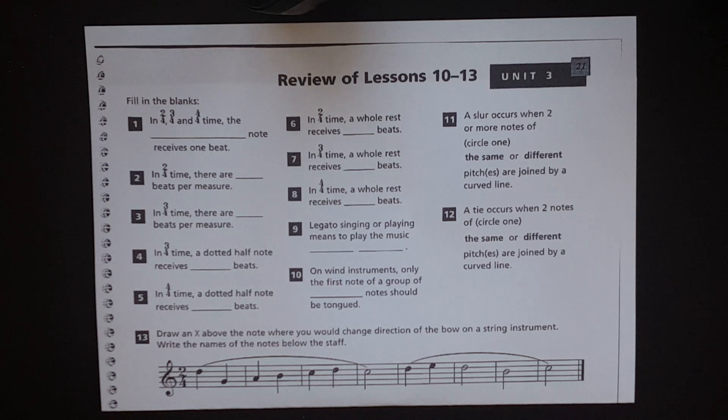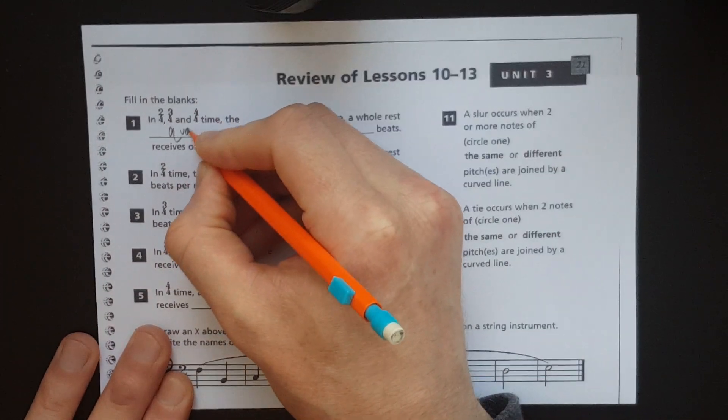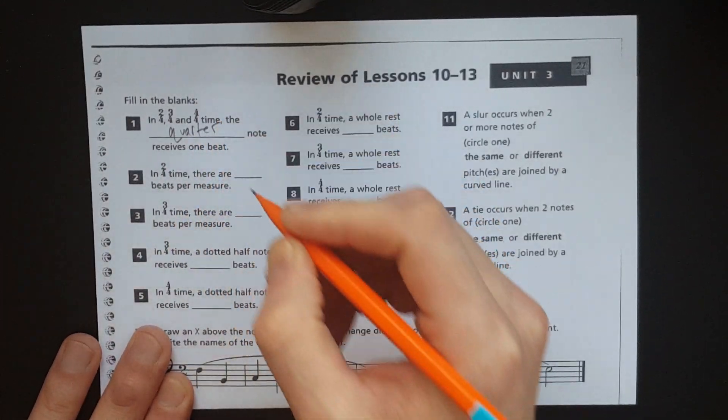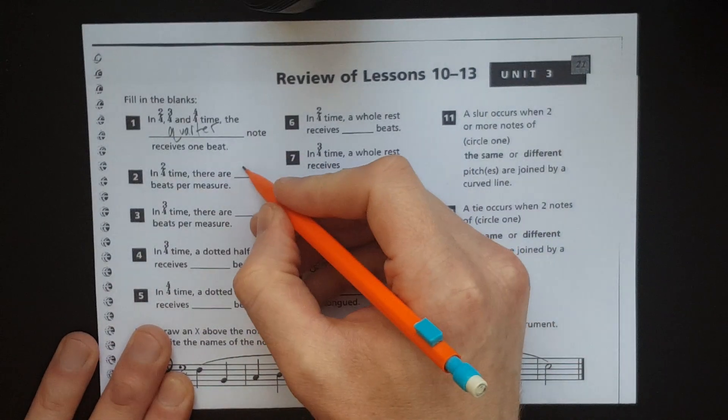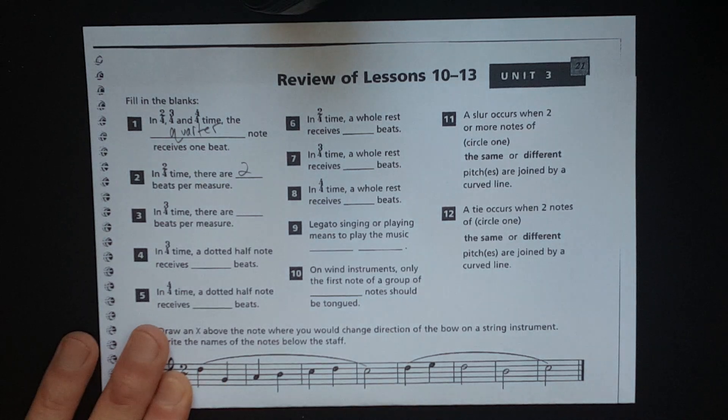So, review. In 2-4, 3-4, and 4-4 time, the quarter note receives one beat. Alright, number two. In 2-4 time, there are how many beats per measure? Two. Remember, the top number tells you how many. The bottom number tells you what kind.